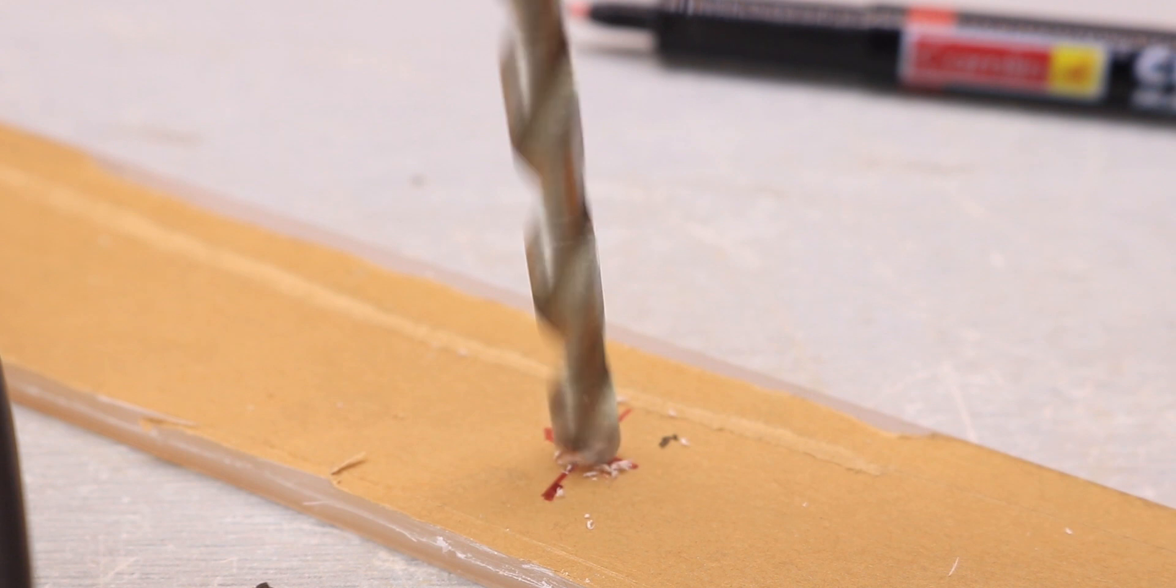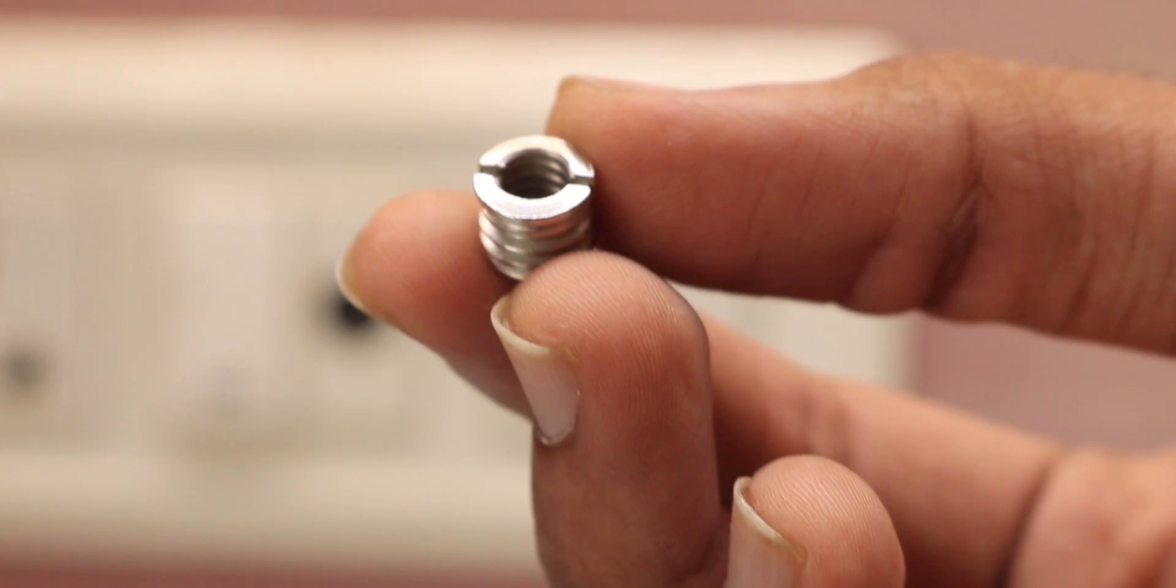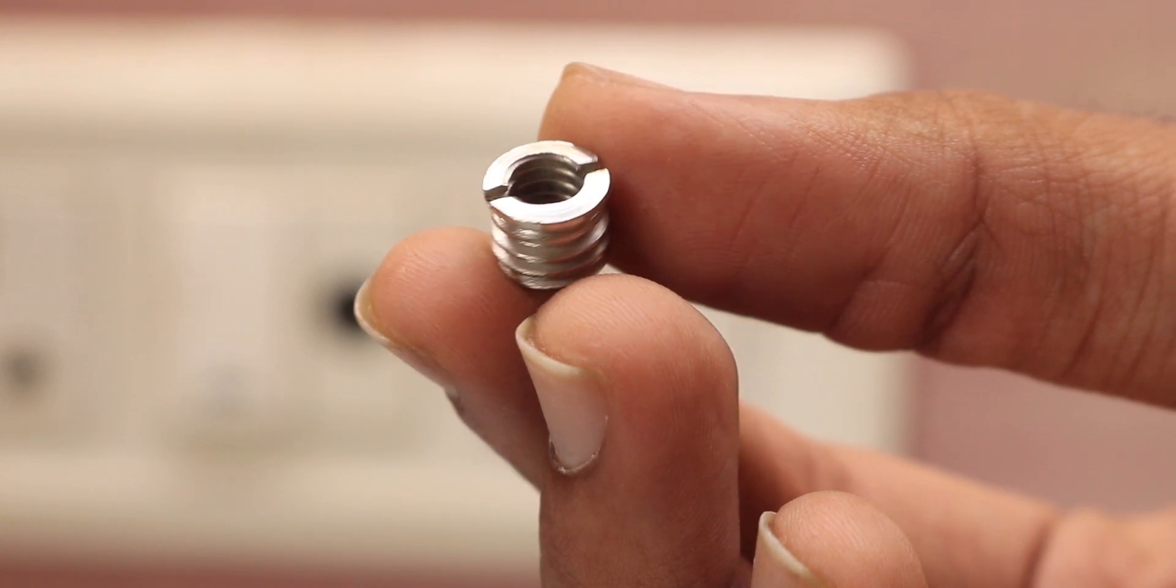Once that was done I took the bottom piece, marked its center and drilled 3/8 inch hole. Now we can attach this 3/8 inch to quarter inch adapter which we will use later on to mount it on a tripod.